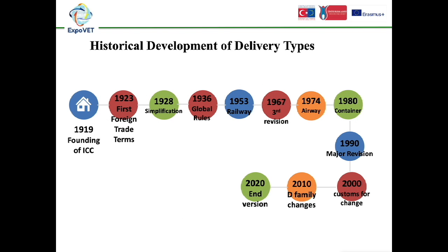Delivery methods in foreign trade were determined according to unwritten commercial customs and traditions until 1936. Trade carried on according to those customs brought many problems. There was a need for a supranational institution independent of governments, standardizing commercial customs in a way that all foreign trade countries could use jointly. For this purpose, the International Chamber of Commerce (ICC) was established. Since 1919, the ICC has tried to increase the volume of foreign trade by reducing formalities and ensuring the use of common documents and procedures.